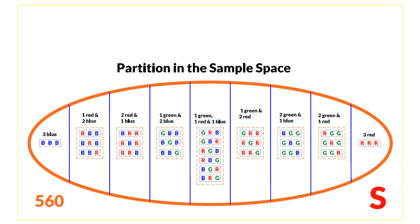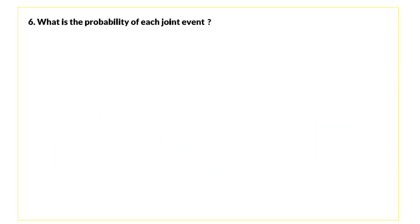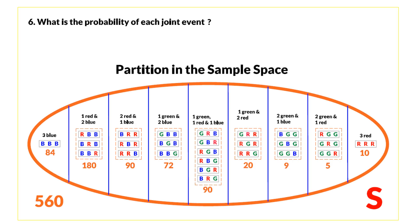Going back to the sample space, we place in front of each event the number of ways that event can occur — for example, 84 for three blue. Question six: what is the probability of each joint event? We divide each event's favorable outcome count by the total of 560. For three blue, that is 84/560, and we continue for all remaining events.